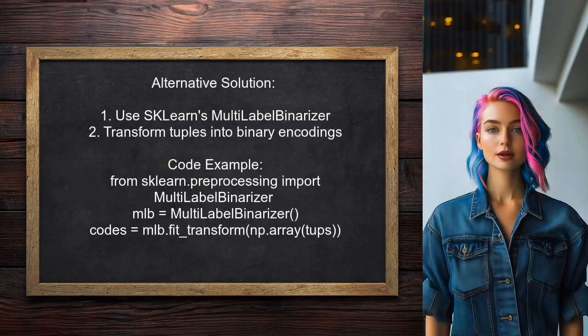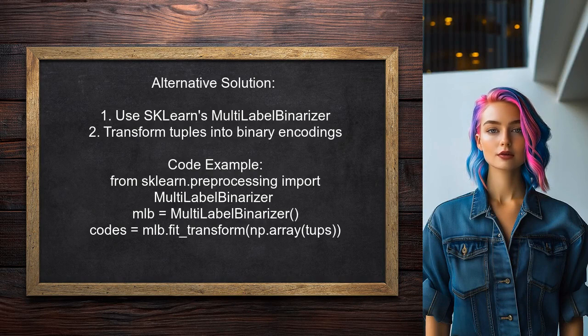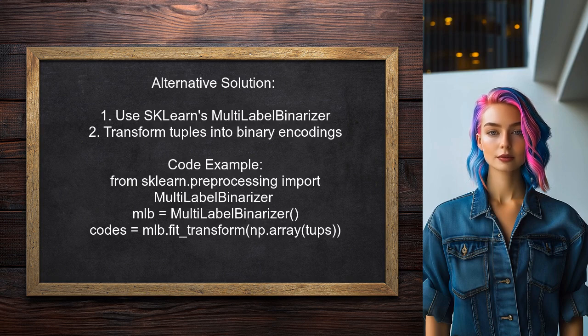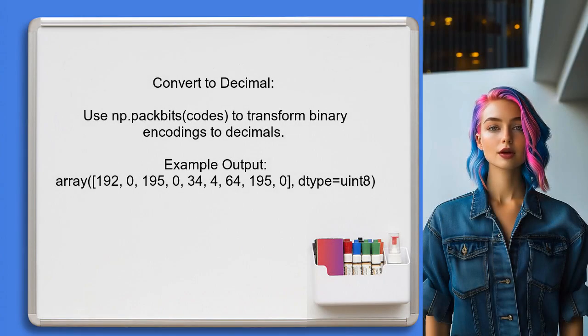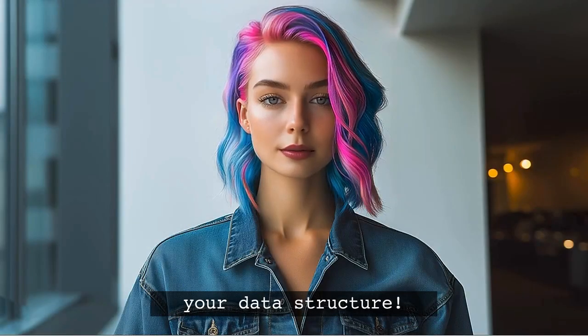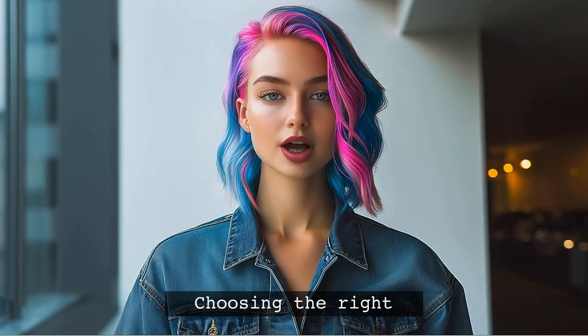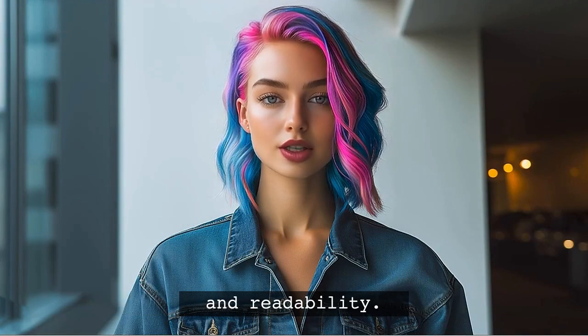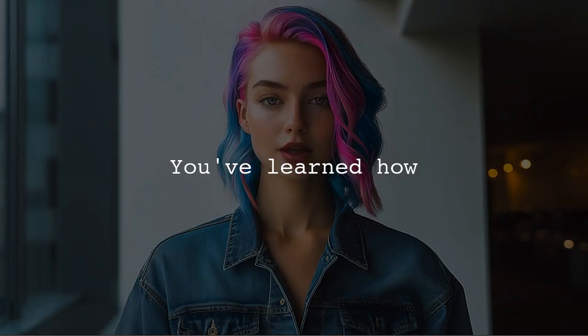An alternative approach to factorizing a list of tuples is to use sklearn's multi-label binarizer. This method transforms the tuples into a series of binary encodings, which can be useful for various applications. The resulting binary encodings can also be converted to decimal format using NumPy's PackBits function, if desired. Here's a pro tip: Always consider the data structure you're using. Choosing the right one can significantly enhance your code's performance and readability.